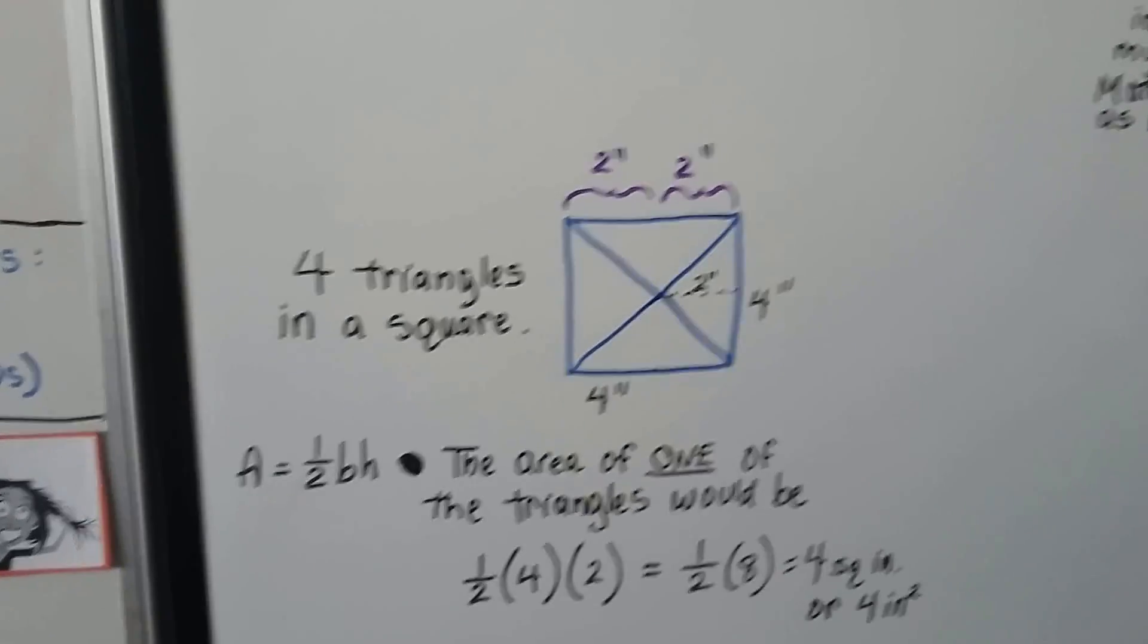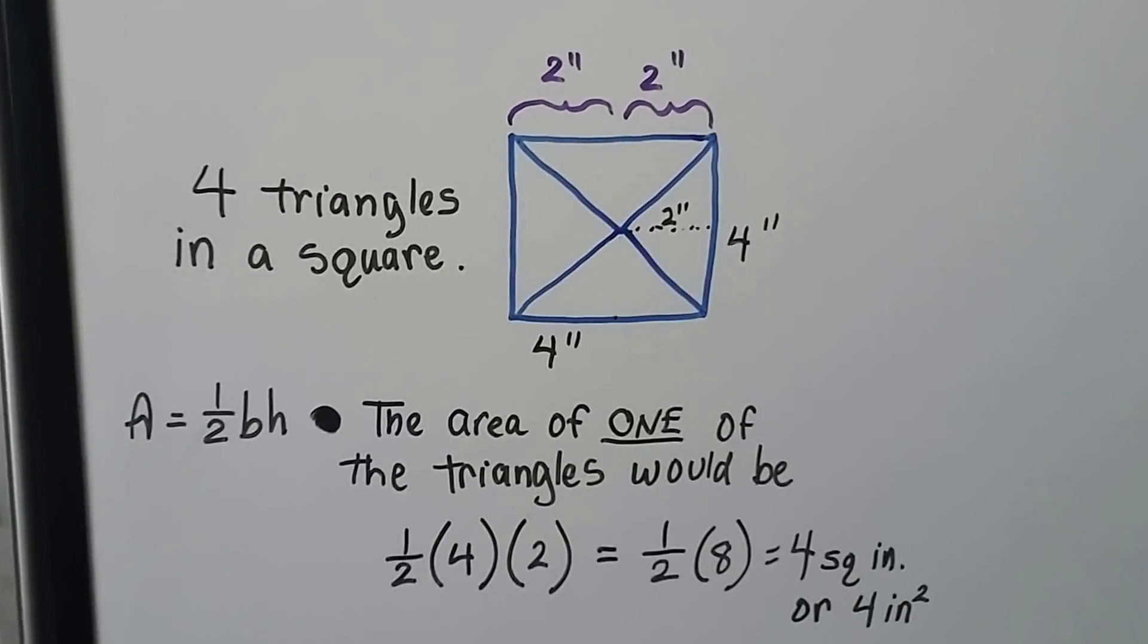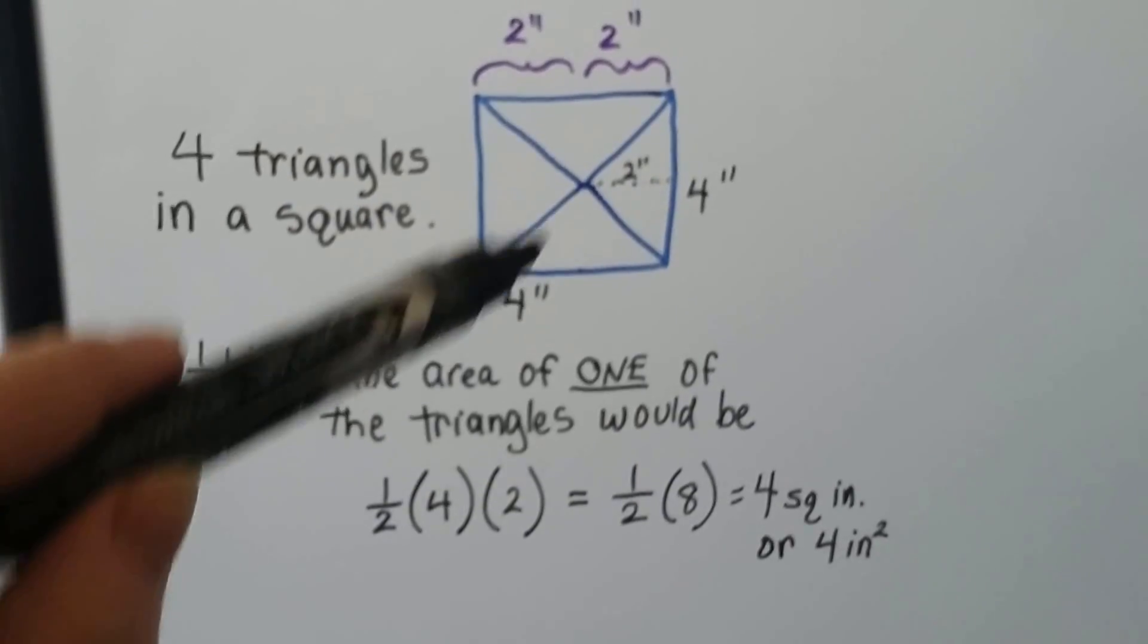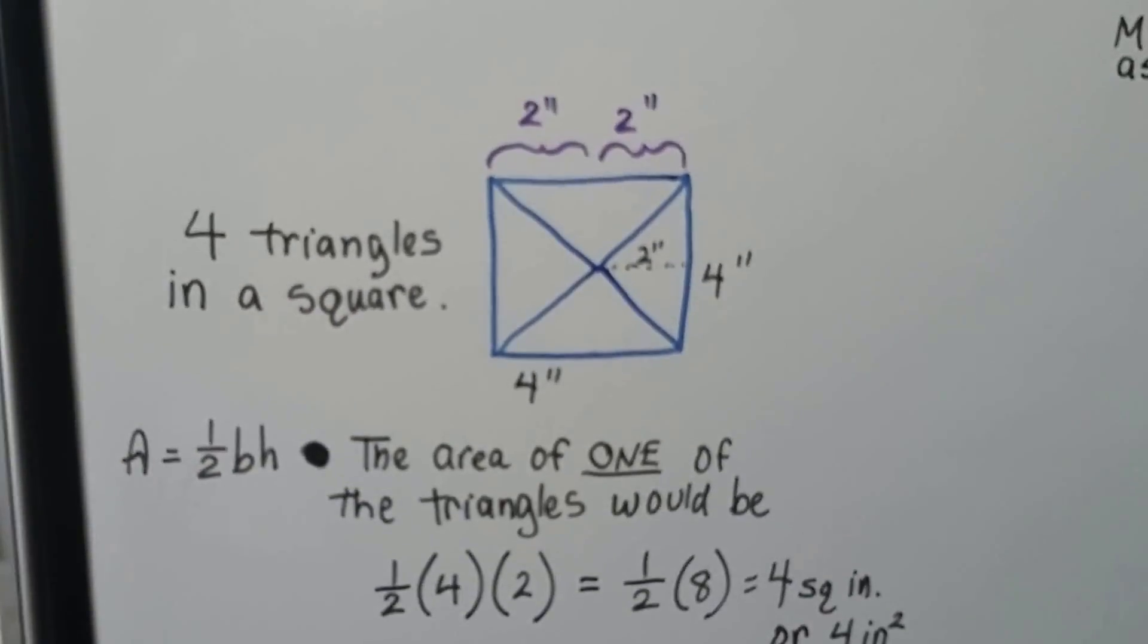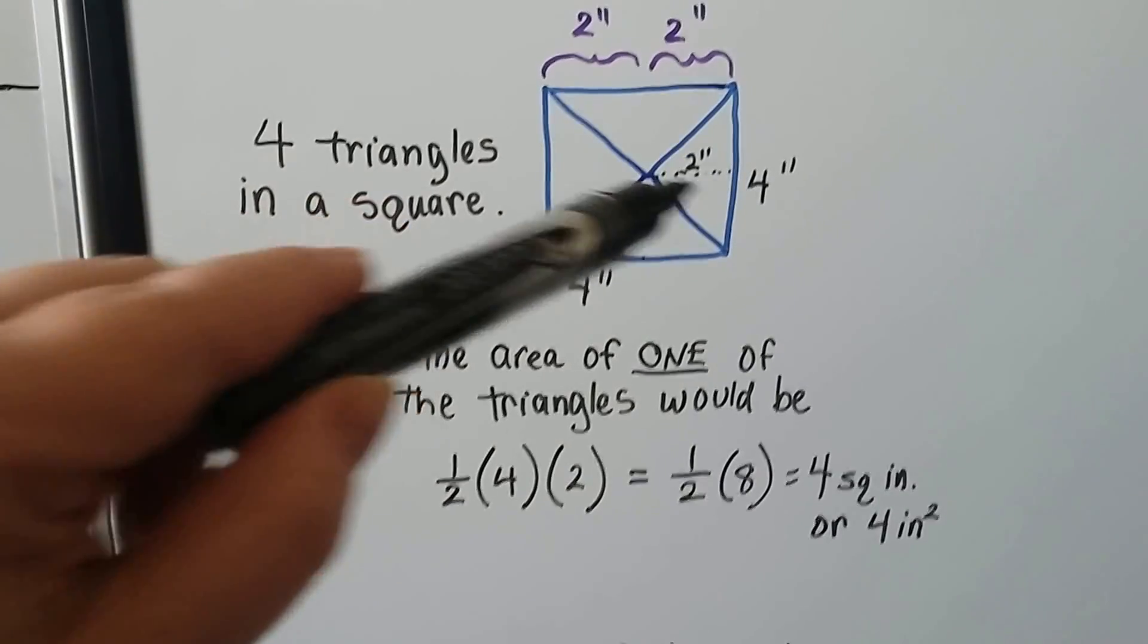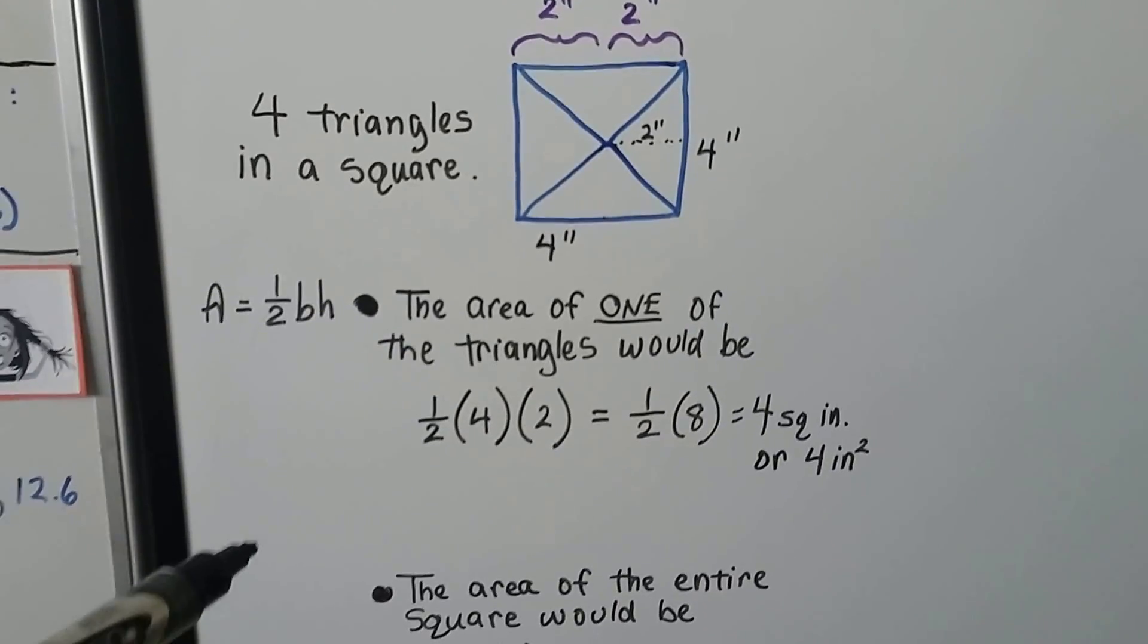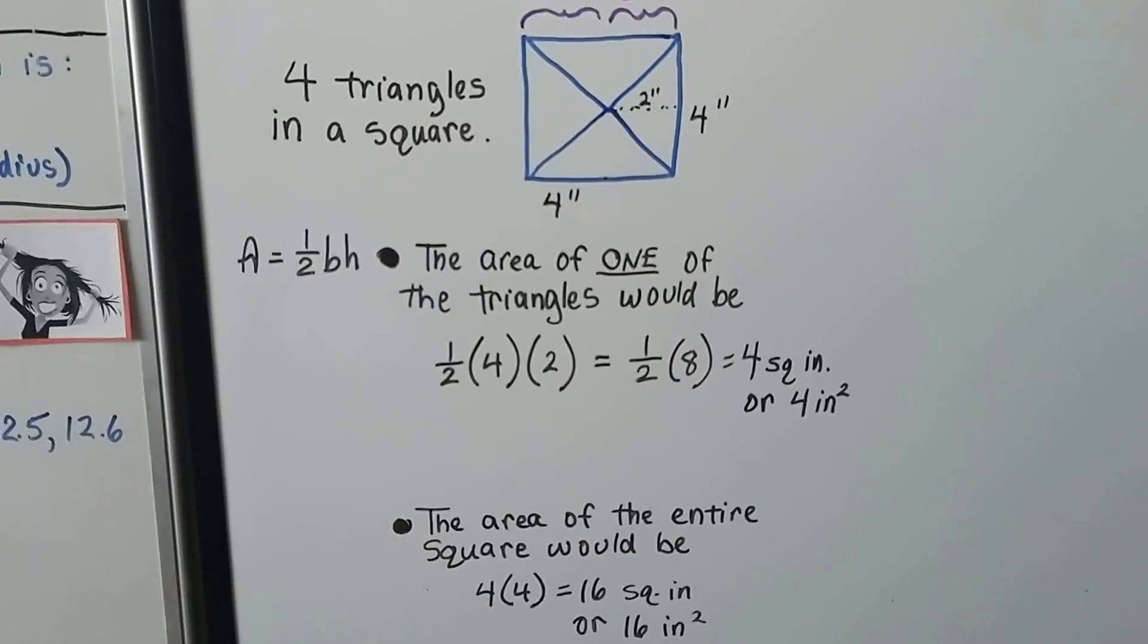Look at this one. We have a square, and we know the definition of a square means all the sides are equal length. So all the sides would be four inches. If we have a triangle inside and we need to find the area of the triangle, well, if this side's four inches and this side's four inches, that means half of it would be two. That means that height would be two inches. So we have a base of four inches and a height of two inches. We could find the area of this one triangle by doing half times four times two, which is half times eight, which would be four inches squared or four square inches. And the area of the entire square would be 16 because we'd do the four times four to get the whole thing.